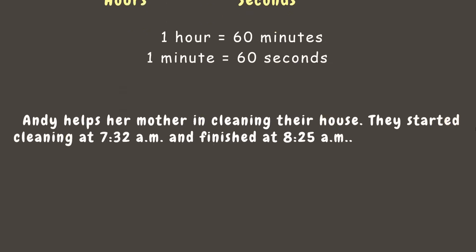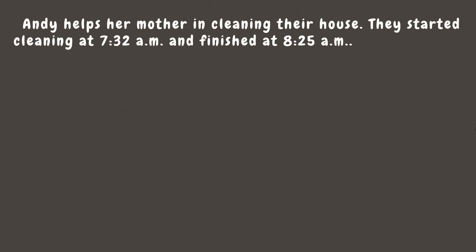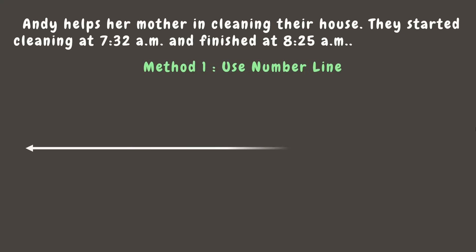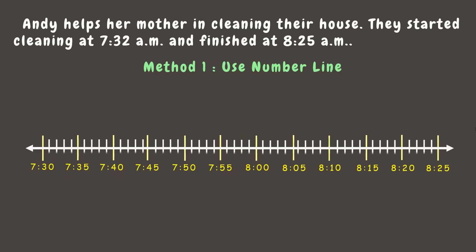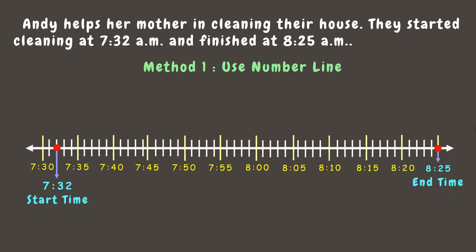Going back to our problem, we have two ways of finding elapsed time. The first is by using a number line. Let's make a number line starting from 7:30 AM, skipping every five minutes, up to 8:25 AM. Here is the start time, 7:32 AM, while 8:25 AM is the end time.